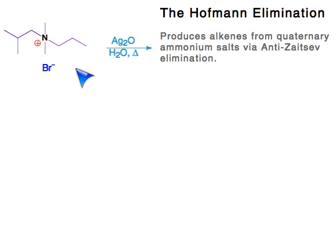Quaternary ammonium salts are used in Hofmann elimination, and they're also used in phase transfer catalysis along with crown ethers. We're going to focus on the Hofmann elimination here. We use silver oxide, water, and heat. You can do this in two steps — saving the heat for the second step — or putting everything together with the heat at the same time. It doesn't matter.